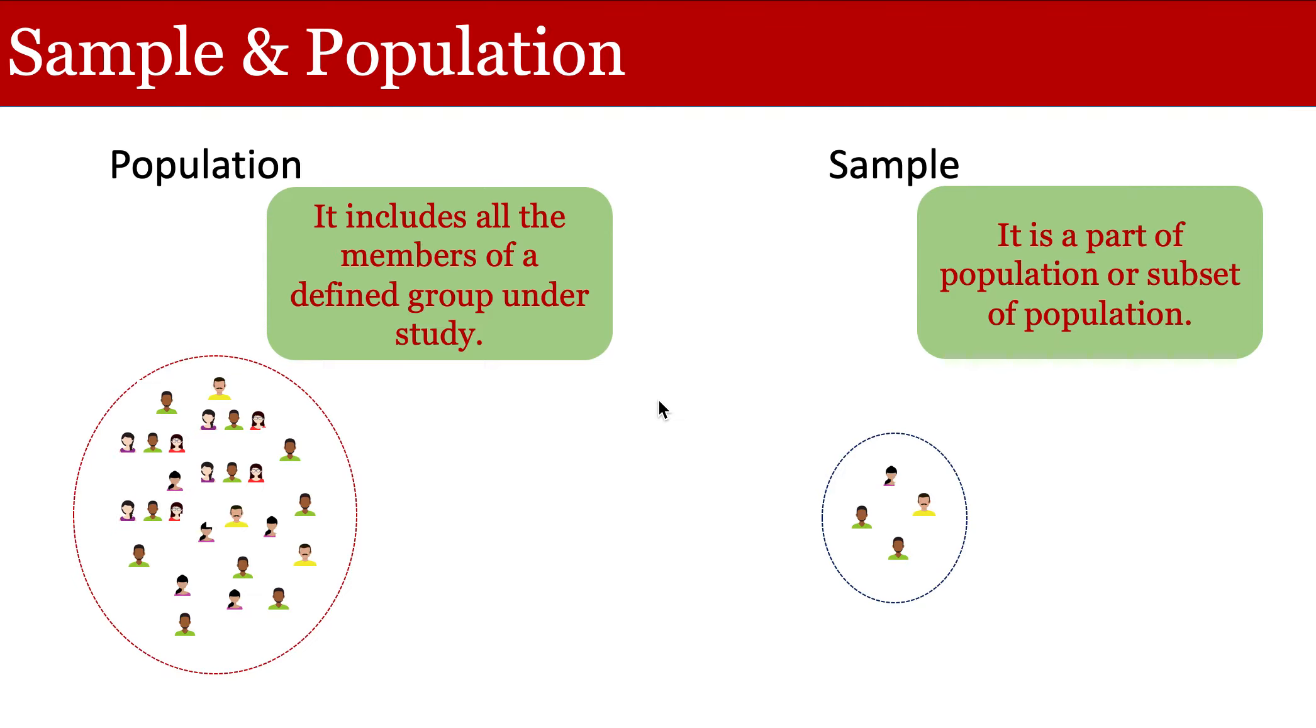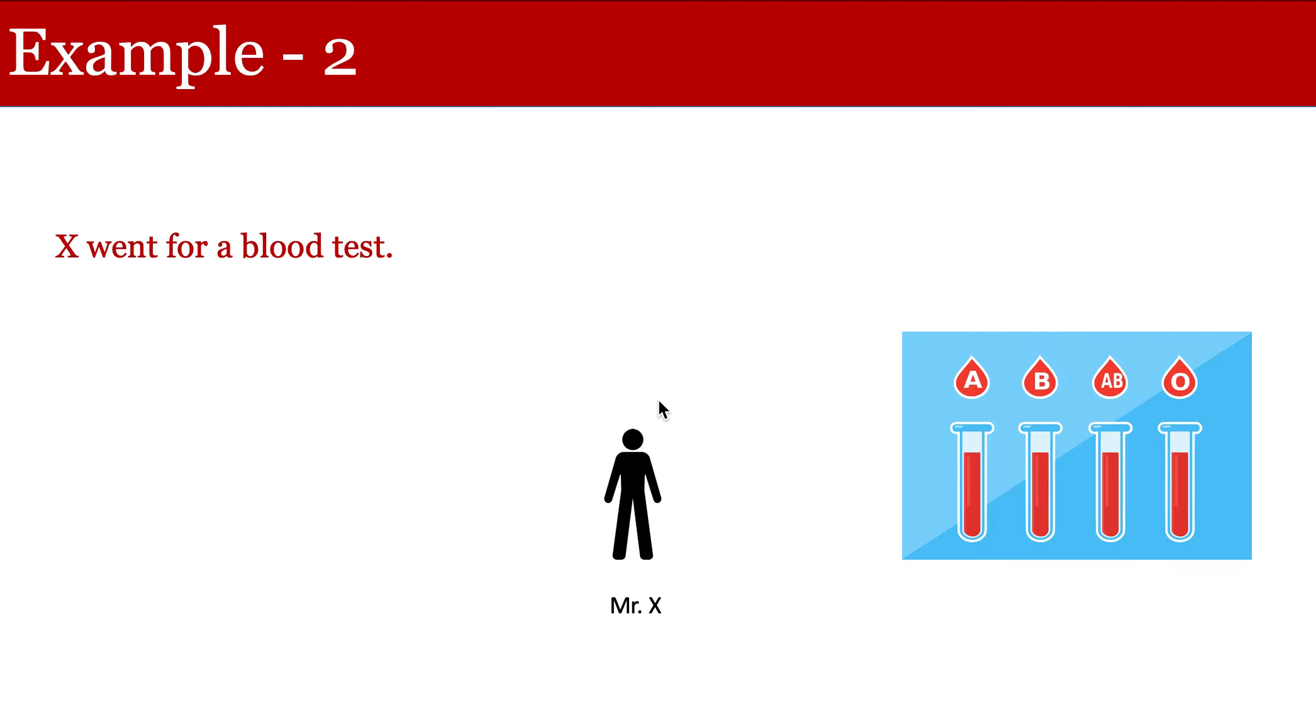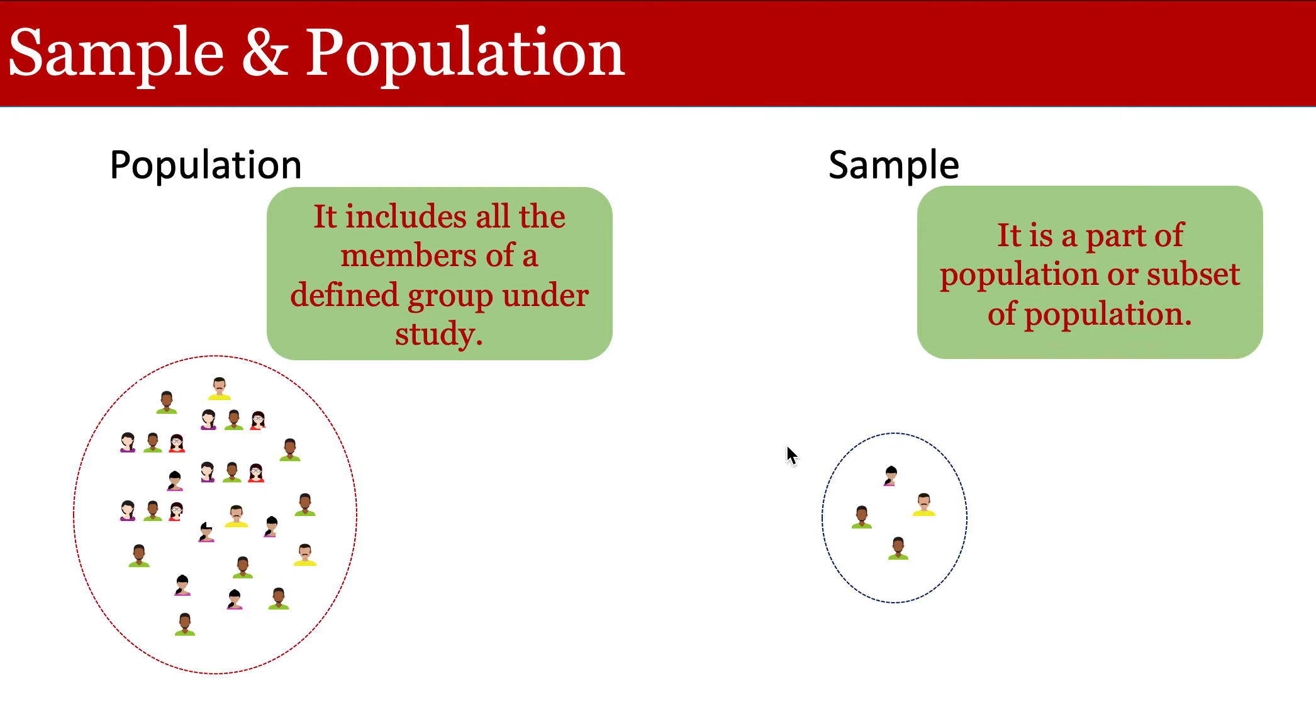So in the case of our cookies example, all of the cookies form a population and when you selected one or two cookies out of them, then those cookies are considered as a sample. And in the second example, the entire blood, all the blood from this person is considered the population, but only a small amount of blood is taken for the test and that amount is considered as a sample. So now how this population and sample we can define for our study.